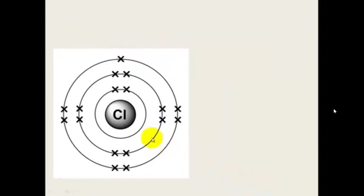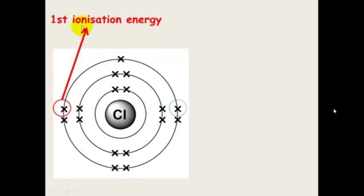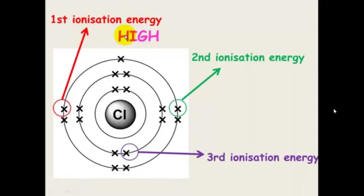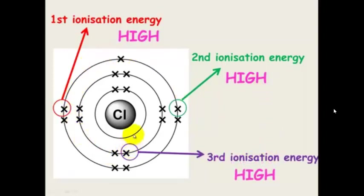Looking at chlorine: chlorine doesn't want to lose any of its electrons — it wants to gain one. It only needs to gain one. So to lose the first electron is its first ionisation energy, the second would be its second, and the third its third. All of these are going to be high energy ionisations. High amounts of energy are needed to remove any of these electrons because chlorine wants to gain an electron — it is a lot harder to remove them.